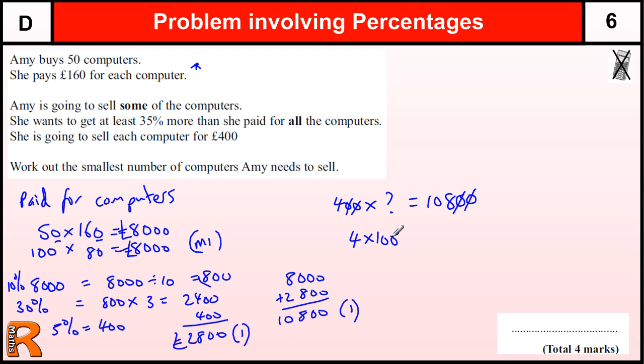Well, I know four times 100. Sorry, no, let's rub that out. Four times 25, I know, is 100. And I want to make 108. So four times 26 would be 104. So four times 27 is going to be 108. So 400 times 27 would be 10,800.